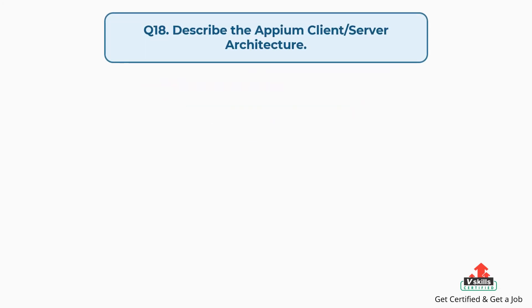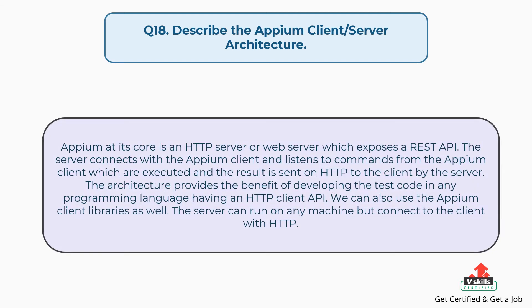Question number 18: Describe the Appium client/server architecture. Appium at its core is an HTTP server or web server which exposes a REST API. The server connects with the Appium client and listens to commands from the Appium client, which are executed, and the result is sent on HTTP to the client by the server. The architecture provides the benefit of developing test code in any programming language having an HTTP client API. The server can run on any machine but connects to the client with HTTP.